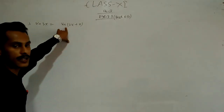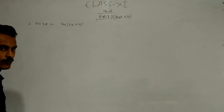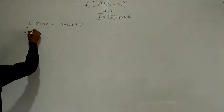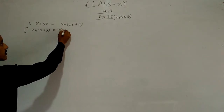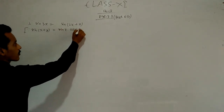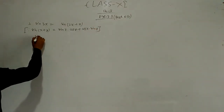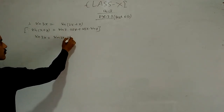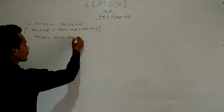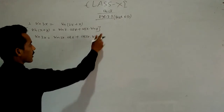We can do the full expansion using the sin(x + y) formula, where we treat 2x as x and x as y. The formula for sin(x + y) is sin x cos y + cos x sin y. So sin 3x is equal to sin 2x · cos x + cos 2x · sin x.